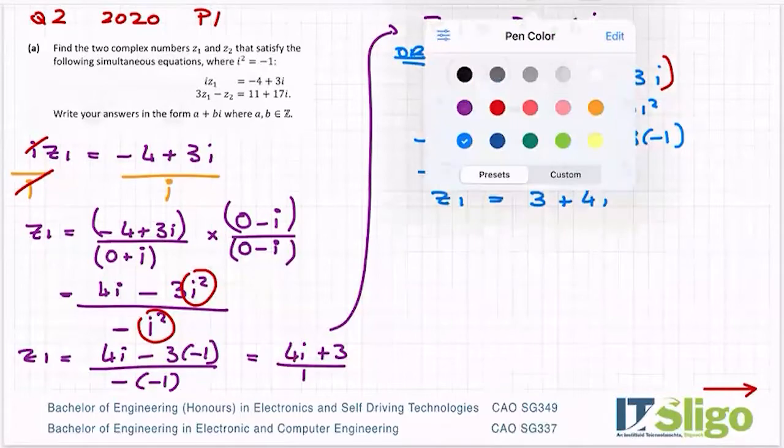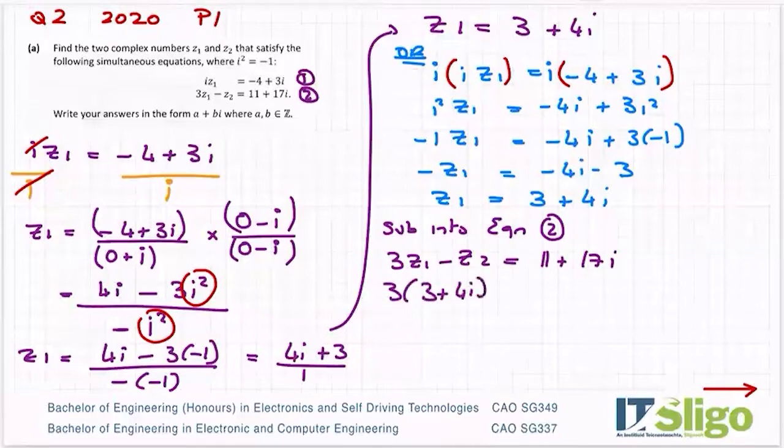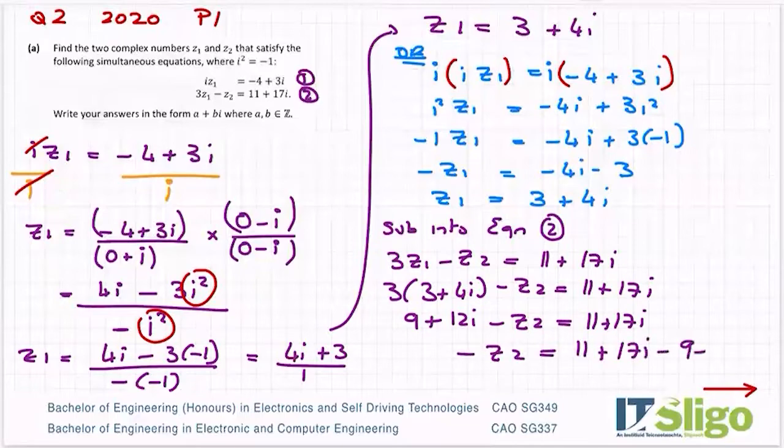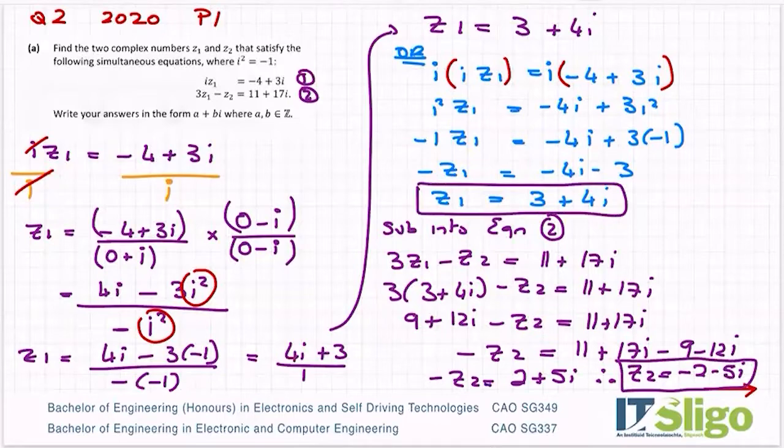To finish it off, we sub into equation 2. I get 3 times Z1 minus Z2 equals 11 plus 17i, or 3 times (3 plus 4i) minus Z2 equals 11 plus 17i. 9 plus 12i minus Z2 equals 11 plus 17i. Minus Z2 equals 11 minus 9 is 2, 17i minus 12i is 5i. Therefore Z2 equals minus 2 minus 5i.